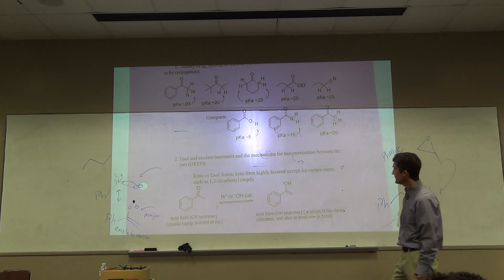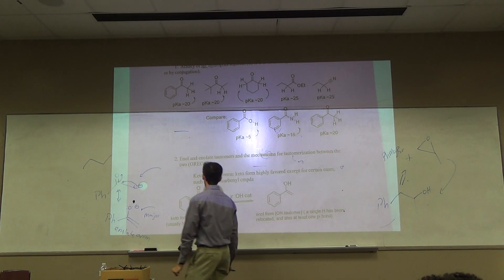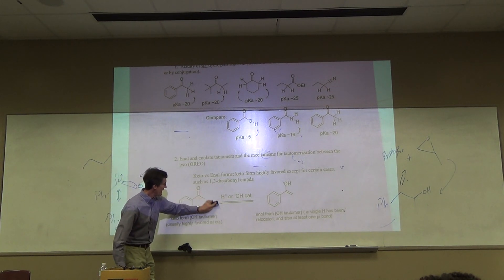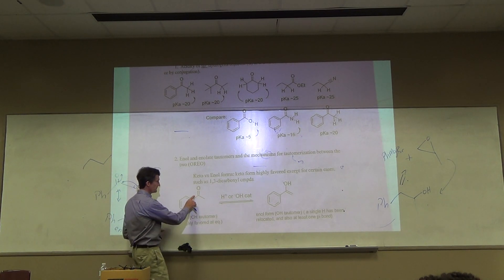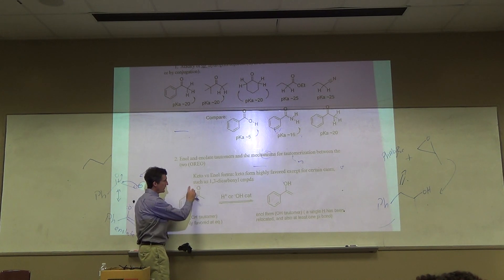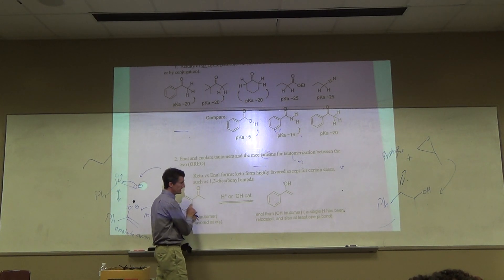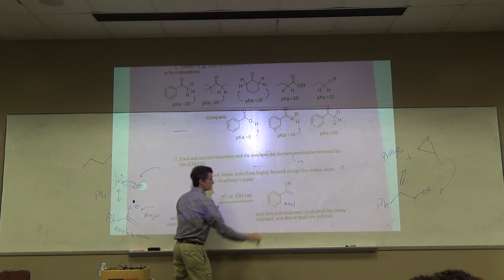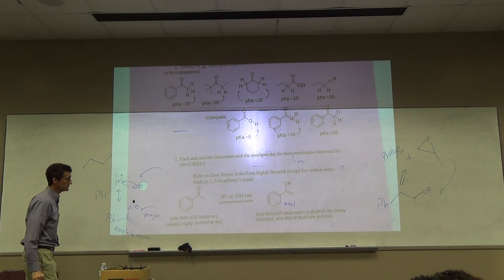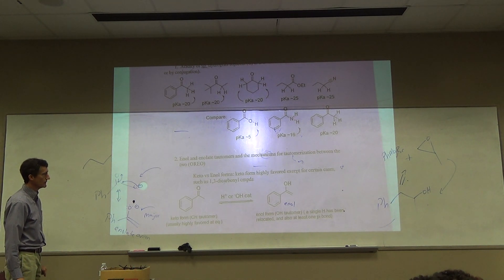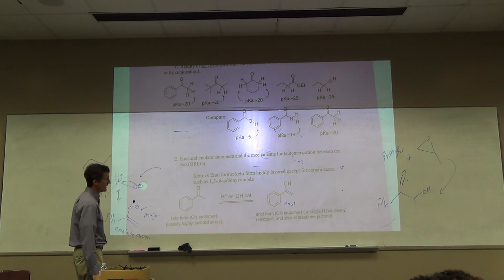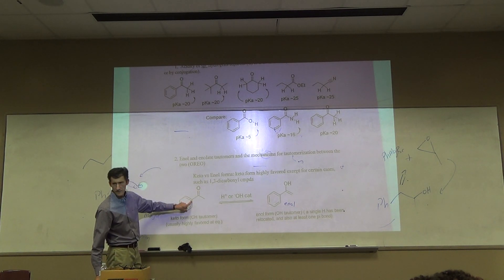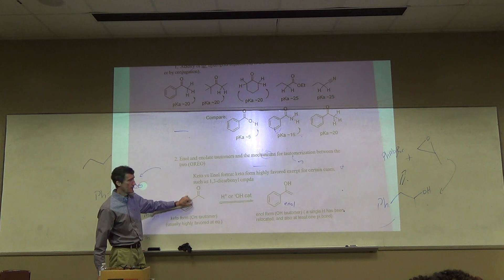Enolate, enolate, tautomers, and mechanisms for tautomerization between the two. OREO. Okay, any time you have an aldehyde or ketone, it's always potentially at equilibrium with the enol. And so that's an enol, right?